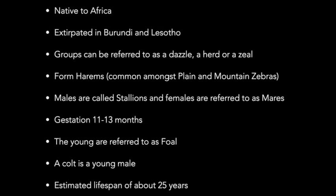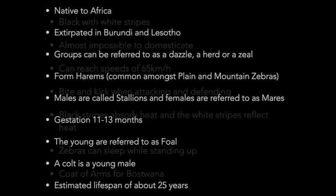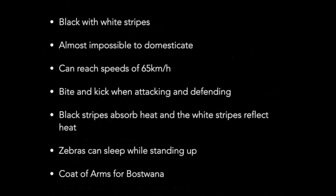The gestation period varies from 11 to 13 months depending on the species — the Grévy's zebra typically takes about 13 months, while the mountain zebra ranges between 11 and 12. The young of a zebra is called a foal, and a young male is called a colt, similar to the terms used for horses. The average lifespan of a zebra is about 25 years, though some have been recorded living up to 29 years in captivity. Zebras are black with white stripes, not white with black stripes, though white tends to appear more dominant in most species.